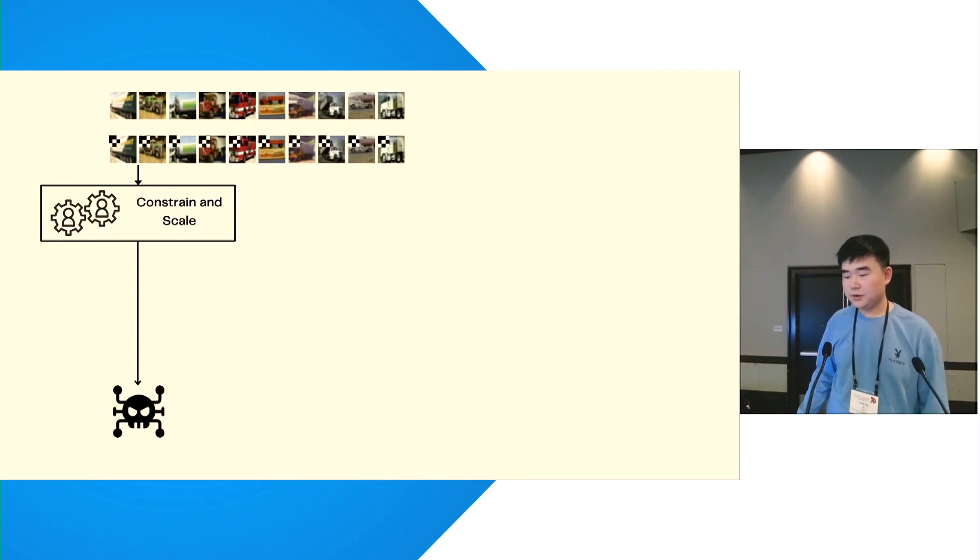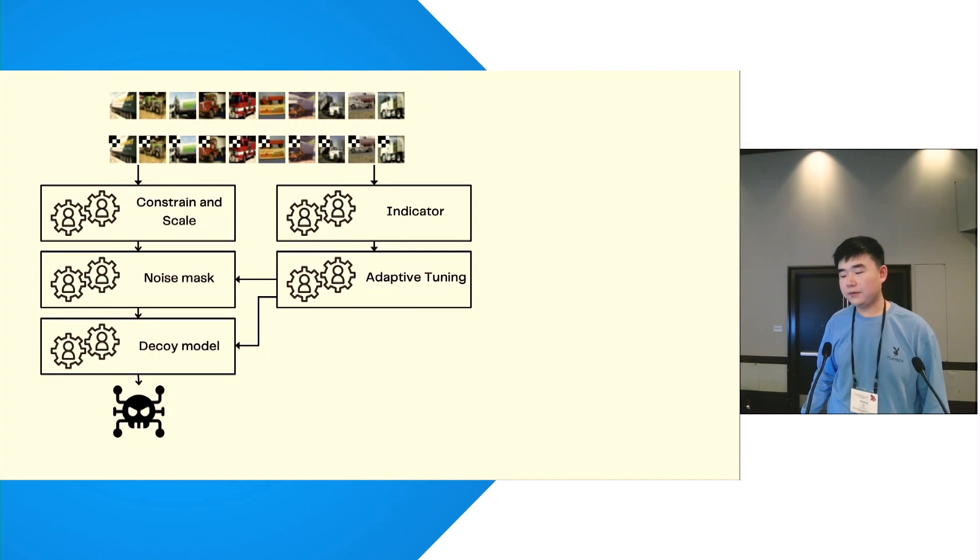we revisit this approach and extend the baseline with two orthogonal evasion modules: noise masks and decoy models, as well as two reconnaissance modules.